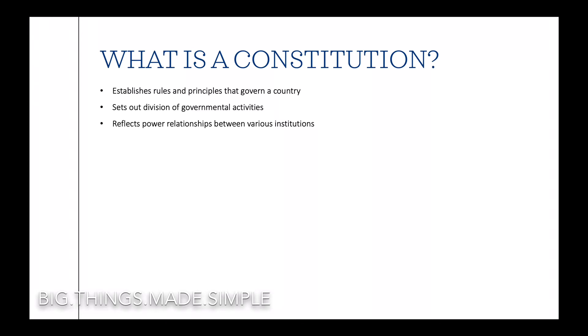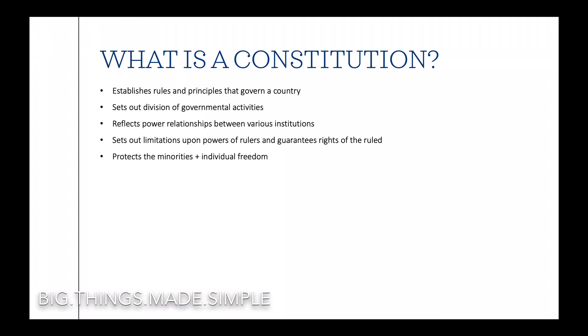A constitution also places limitations upon the powers of the rulers and guarantees the rights of the ruled, like imposing constraints on the state's authority and listing freedoms of individuals and benefits to those who are entitled from the state, as well as offering protection to minorities and individuals. It is important to remember that all institutions contain a mixture of written and unwritten rules.